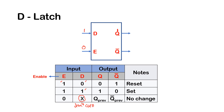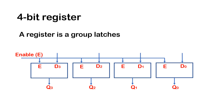That's the D latch. Now you can connect a series of these D latches — as an example, here there are four D latches connected in series. All the enable inputs are connected to one common point, and D0, D1, D2, D3 are left individually. The outputs Q0, Q1, Q2, Q3 are the outputs, and I have not included Q-bar here. This is a four-bit register — remember, a register is basically a group of latches.